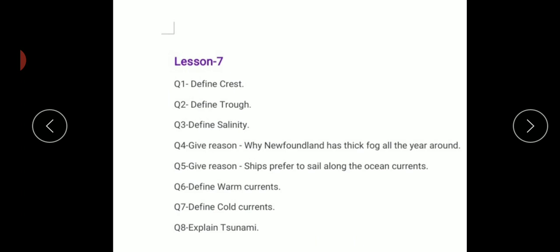Why do ships prefer to sail along ocean currents? When the ship sails down with the current, it will move very fast because the motion is in one direction. It will save time as well as fuel.